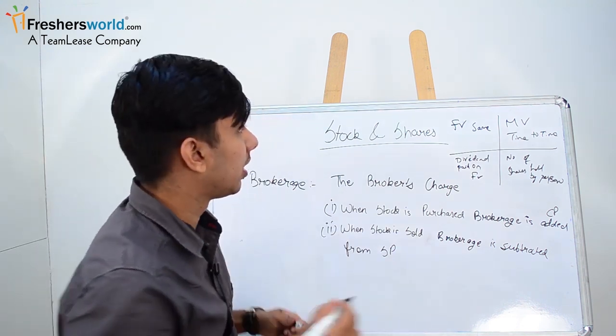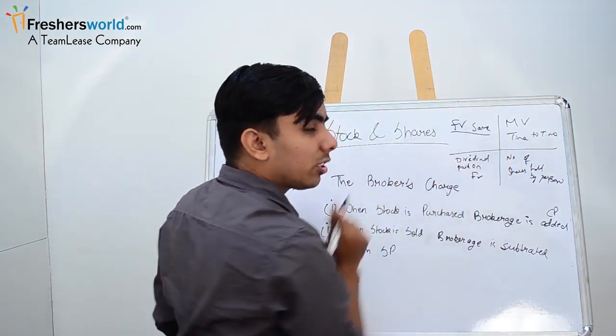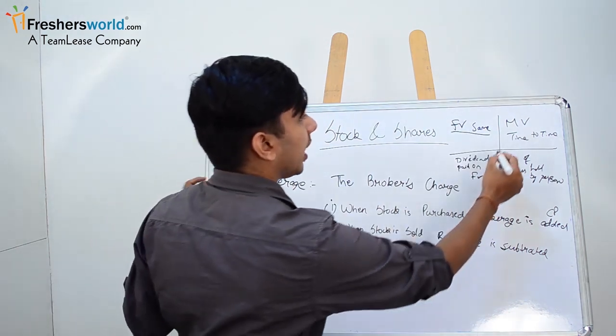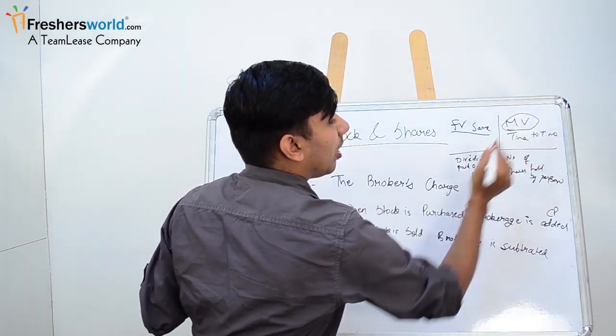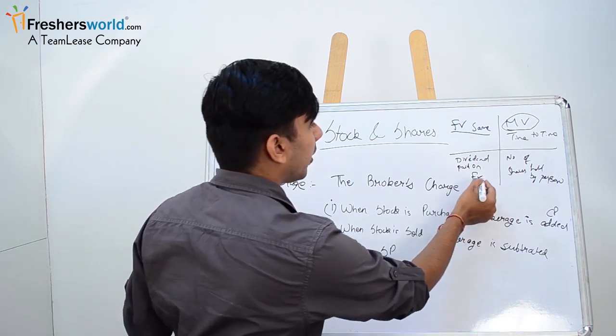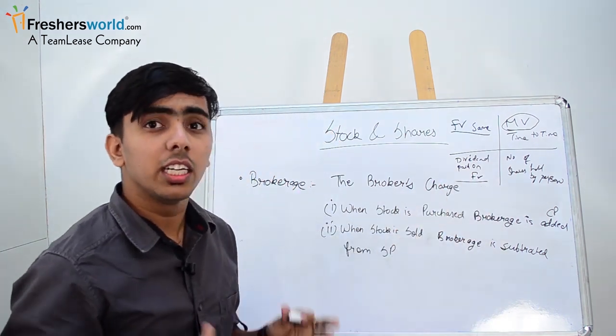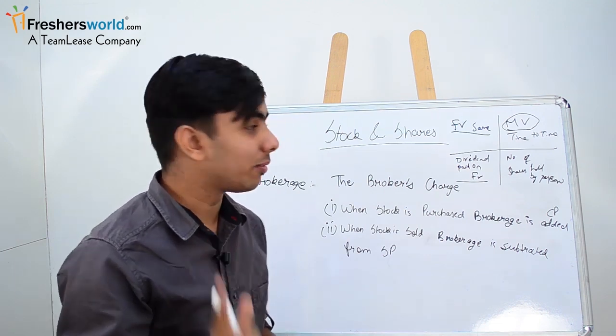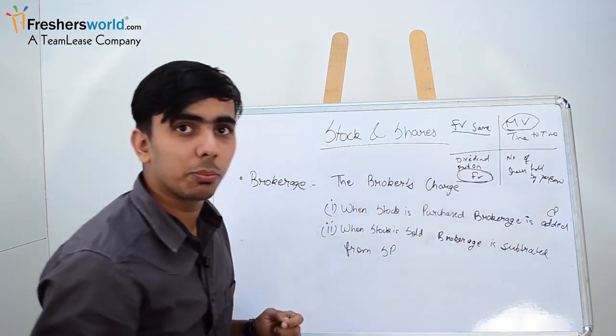Things to remember: face value of a share will always remain the same, it will never change. Second is market value of a share changes time to time. Third point is dividend is always paid on its face value, not its market value. Don't misunderstand that—it's a very important topic.